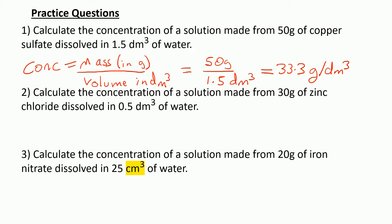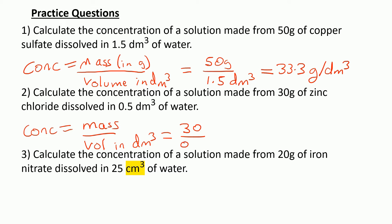Question two is very similar. We write out the equation: concentration equals mass in grams divided by volume in dm cubed. That comes to 30 grams divided by 0.5 dm cubed, which equals 60 grams per dm cubed.